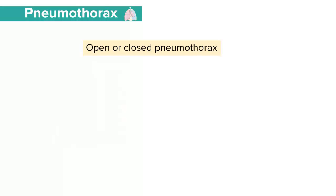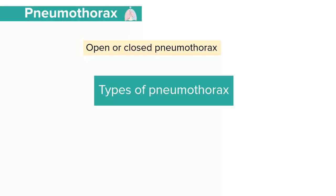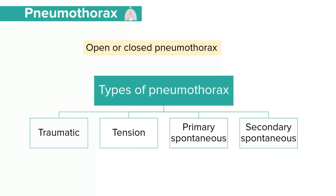Pneumothorax can be classified as open or closed. We can also break it down into other types such as traumatic pneumothorax, tension pneumothorax, and spontaneous pneumothorax. Spontaneous pneumothorax can be further classified as primary spontaneous pneumothorax and secondary spontaneous pneumothorax.